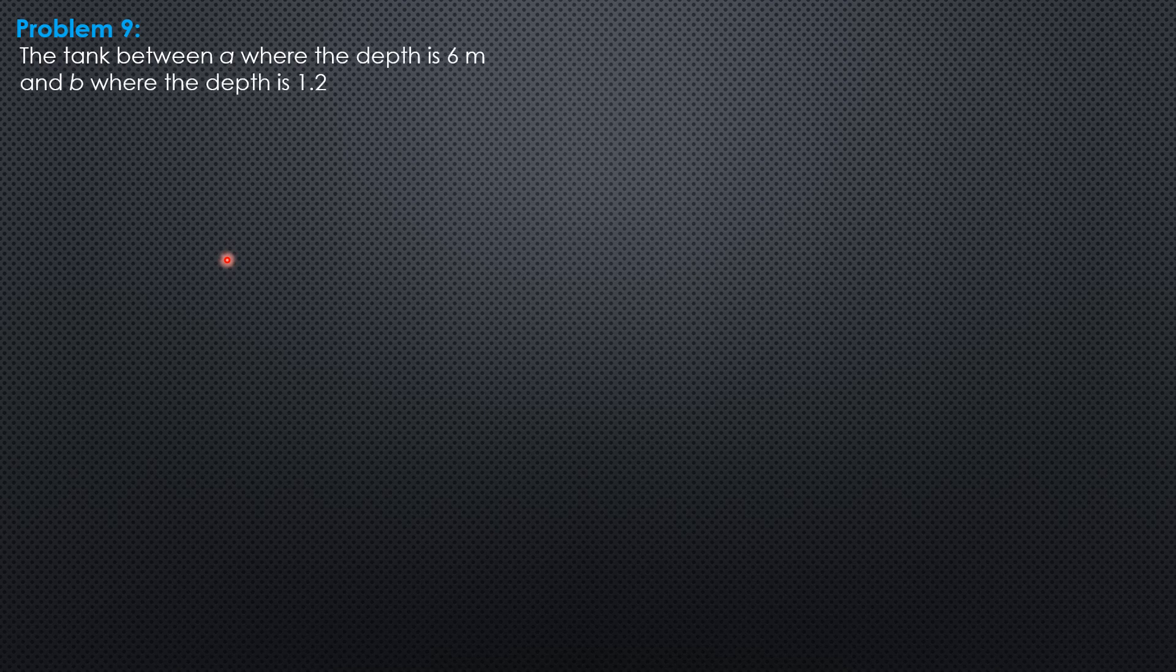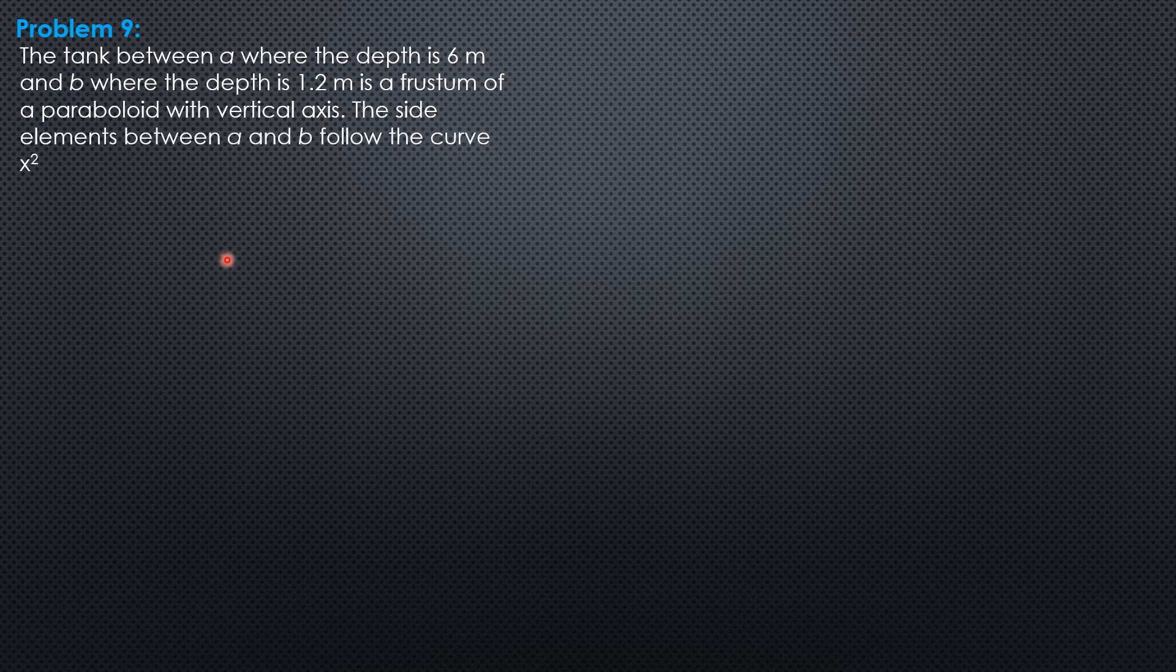Hi everyone, this is example 9 on Unsteady Flow. The tank between A where the depth is 6 meters and B where the depth is 1.2 meters is a frustum of a paraboloid with vertical axis.